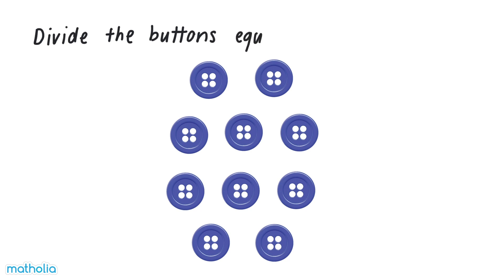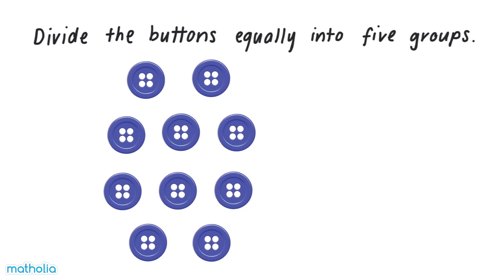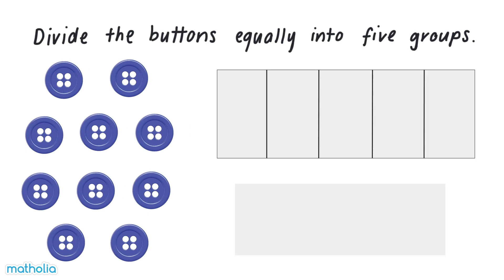Divide the buttons equally into five groups. But there are ten buttons. We need to divide the buttons equally into five groups.